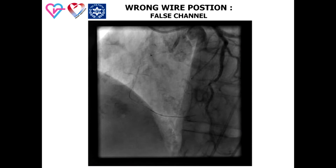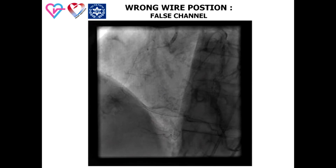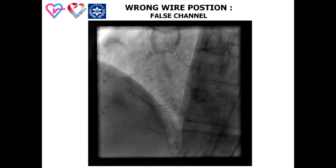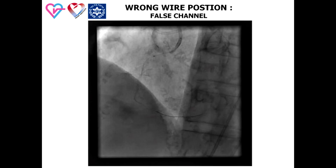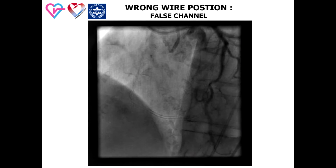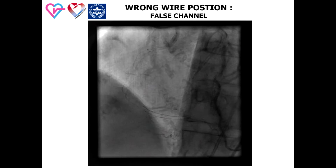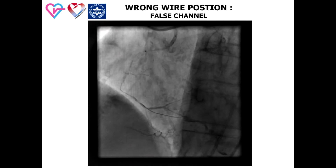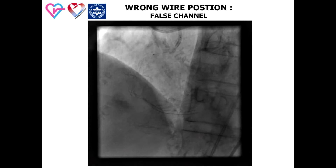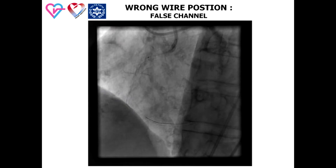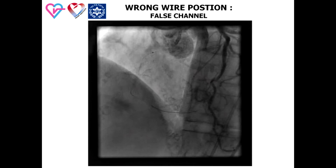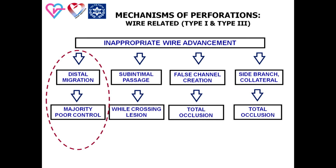Treatment of CTO with stiff guide wires and additional support by microcatheter, balloon of the wire, or guideline can lead to false intramural channel formation and extravasation. The majority of coronary perforations are related to inappropriate wire advancement.